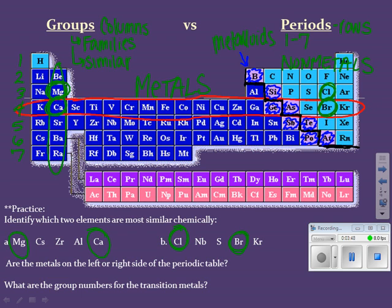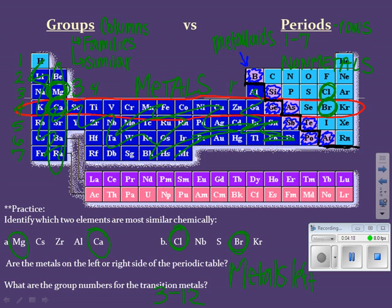Metals are on the left side of the periodic table. As for the transition metals, they are group numbers 3 through 12 — starting right in here, going from 3 to 4 and so on all the way to 12.